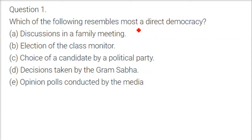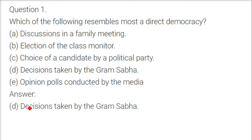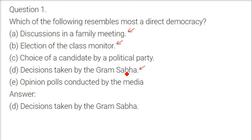Which of the following resembles most a direct democracy? The answer is the decisions taken by Gram Sabha. All the given options — family decision about a TV, election of a class monitor, choice of a candidate by a political party, decision taken by a Gram Sabha, and opinion polls conducted by the media — are ideas related to direct democracy. But Gram Sabha is the closest because it is actually making decisions for the community and everyone is involved.